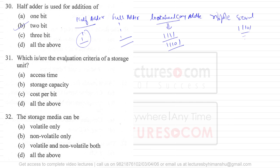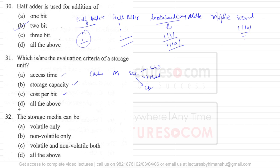Question number 31 asks about the evaluation criteria of a storage unit. Number one is access time — this is a correct evaluation criterion. We have storage units like cache memory, main memory, and secondary storage such as SSD, hard disk, or CD/DVD drives. These form a hierarchy based on access speed, storage capacity, and cost per bit.